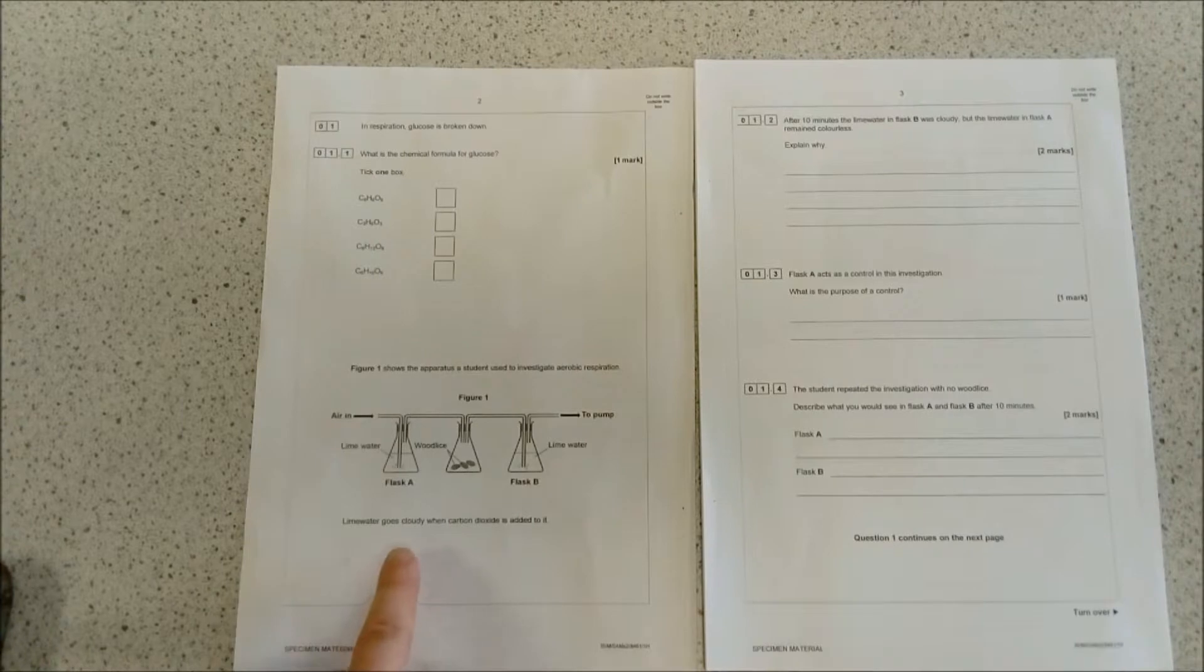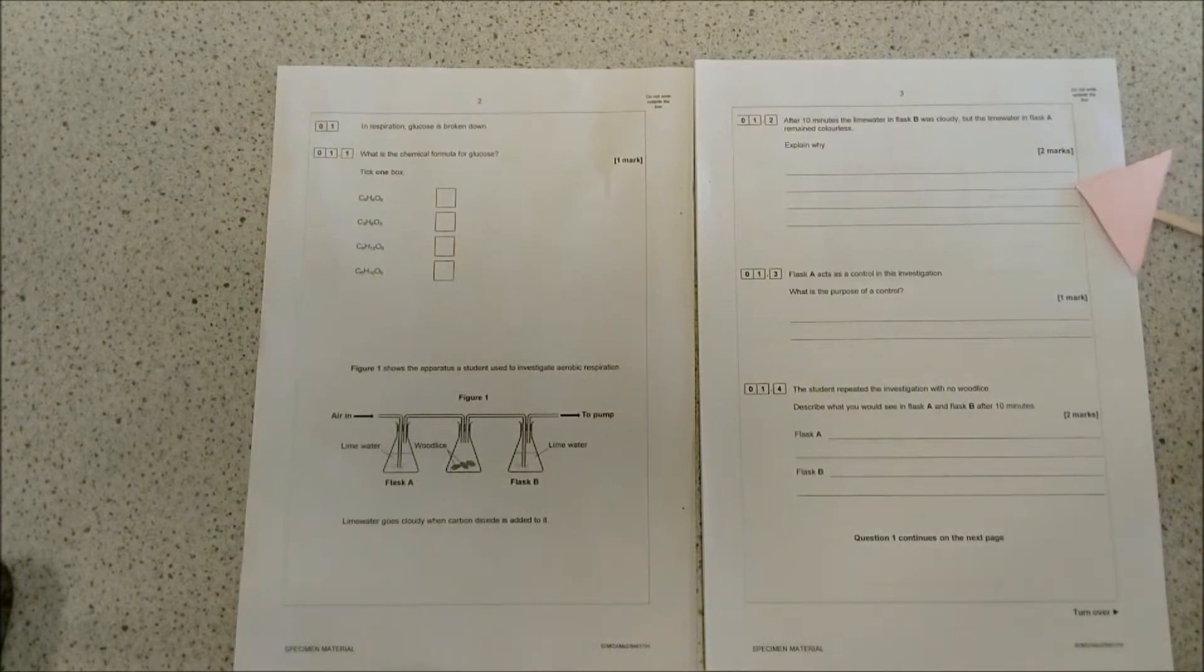Lime water goes cloudy when carbon dioxide is added. The fact that they've gone and told you that kind of implies that you're going to have to include that somewhere in your answer. After 10 minutes, the lime water in flask B was cloudy but the lime water in flask A remains colorless. Explain why. This all focuses on the respiration that is happening from the wood lice. When respiration occurs, carbon dioxide is released.